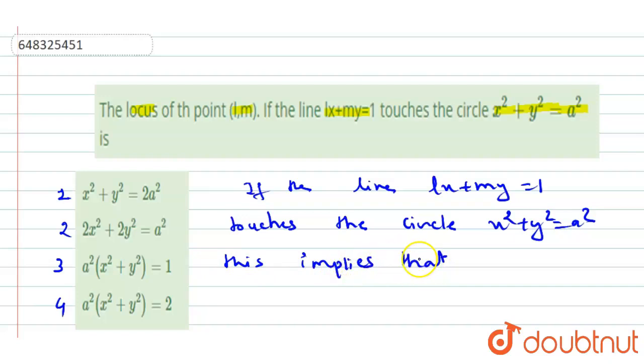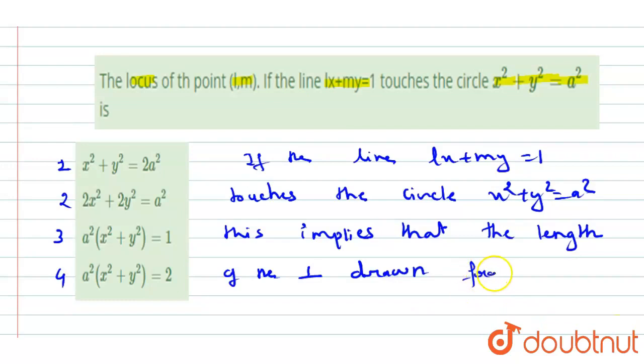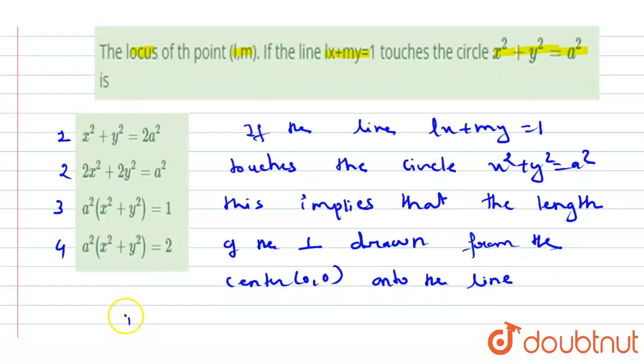the length of the perpendicular drawn from the center (0,0) onto the line is equal to the radius.